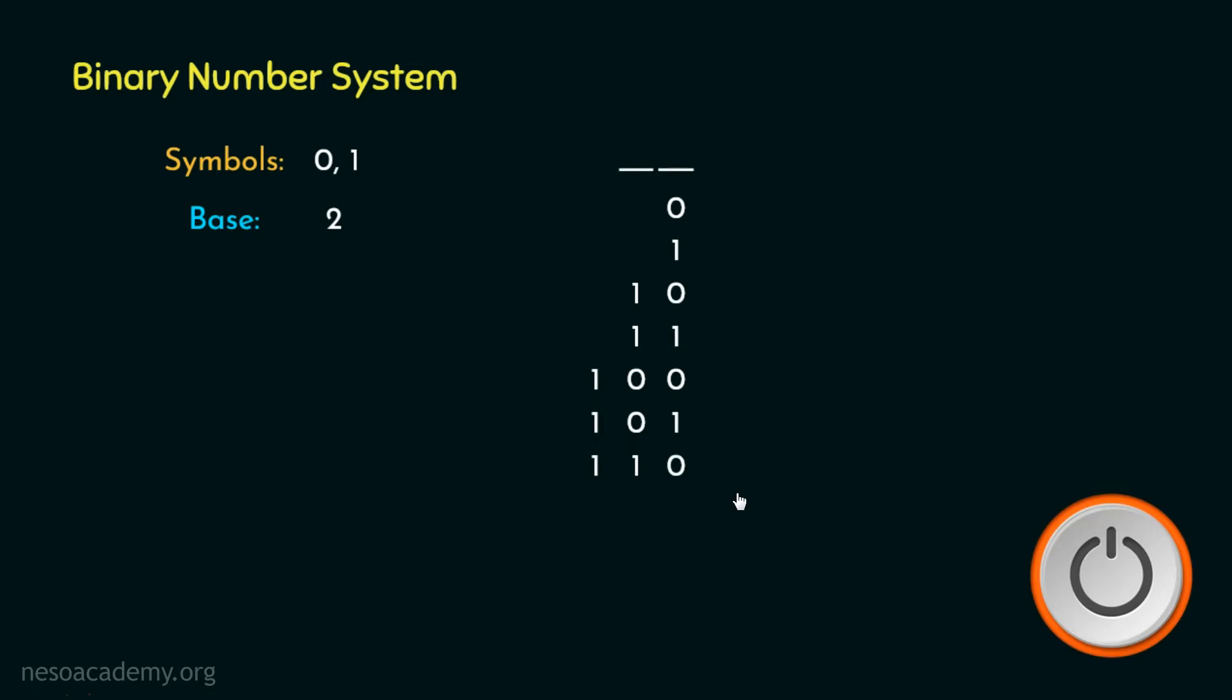Now in case of the next number, the most significant two bits will remain the same and the bit of the LSB's place will be set to one. With this, we again have exhausted all these three places. So naturally, for the next number, we will place one in the new bit's place and the remaining bits will be reset to zeros.